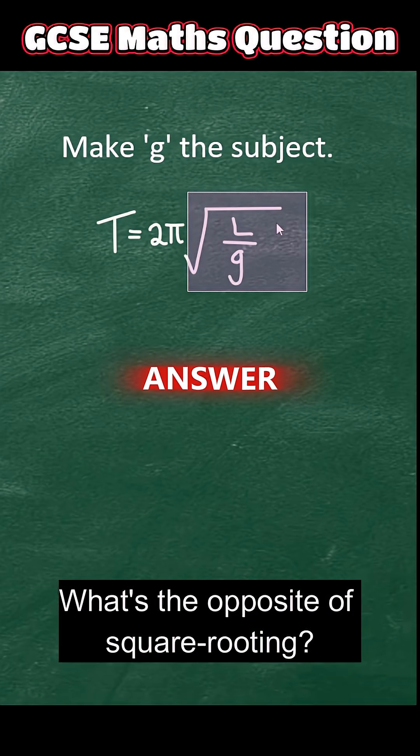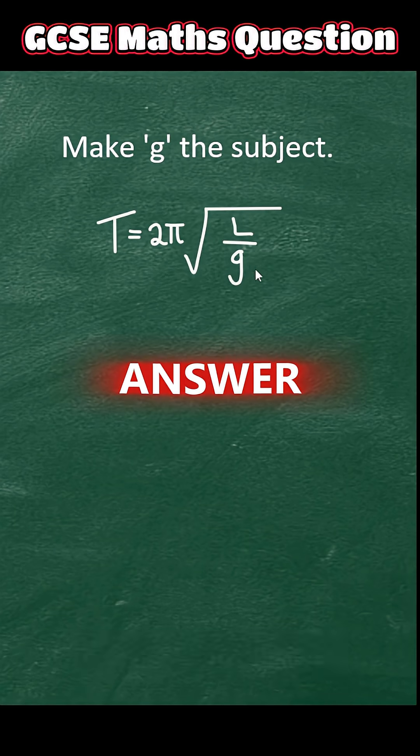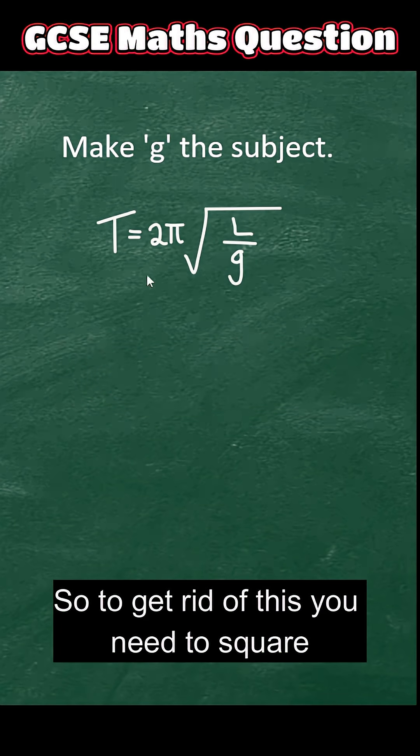What's the opposite of square rooting? Obviously, squaring. So to get rid of this, you need to square both sides.